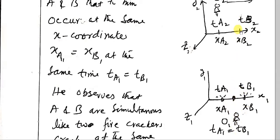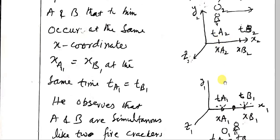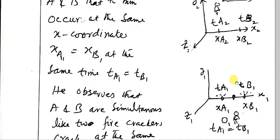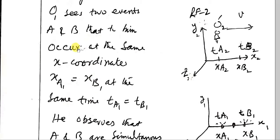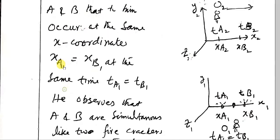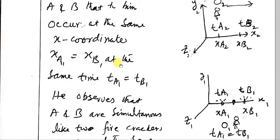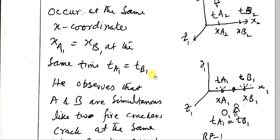The observers see that events are occurring at the same time at both positions a2 and b2, which is observed by O2. Observer O1 observes the event at positions x_a1 and x_b1. A1 and B1 are the two points with respect to observer O1. These two events A and B occur at the same x-coordinates: x_a1 equals x_b1, and at the same time: t_a1 equals t_b1 — simultaneously.